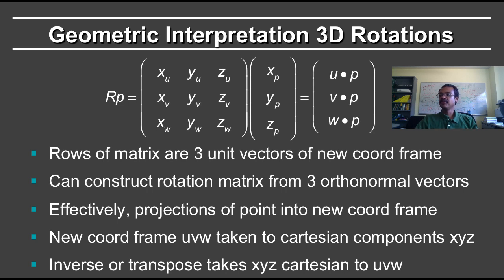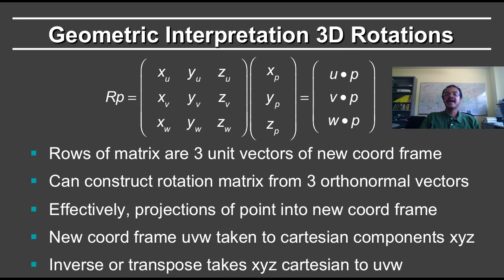It's easy to see: if xp, yp, and zp correspond to u, then u dot p is u dot u, which gives 1, 0, 0. The v axis becomes y, the w axis becomes z. The inverse of this rotation matrix takes the x, y, z axes to u, v, and w. A coordinate frame can be interpreted as taking these new coordinates u, v, and w and making them equal to x, y, and z. The inverse can be interpreted as taking x, y, and z and making them equal to u, v, and w.